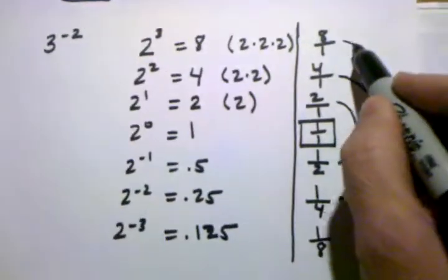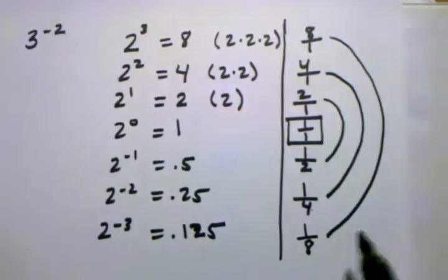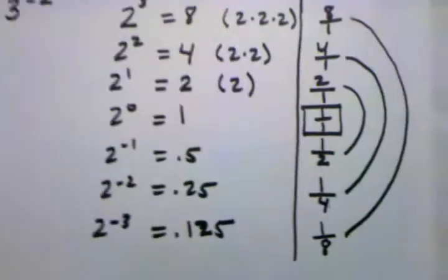2 to the 3rd power is 8. In reciprocal form, it's 1 eighth, and so on. So in other words, you can always figure out what the answer to a negative reciprocal is.